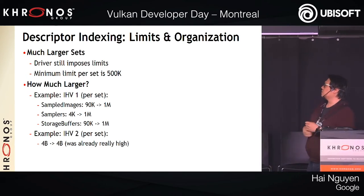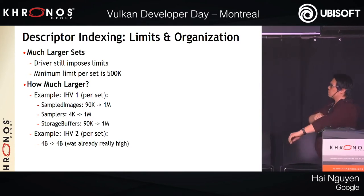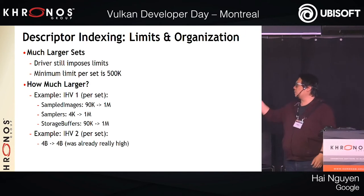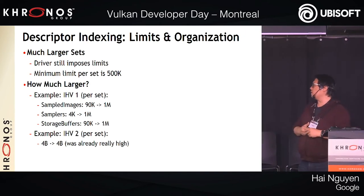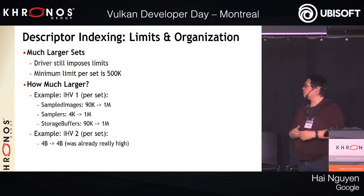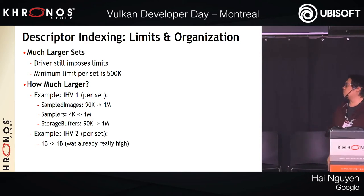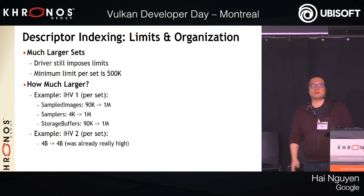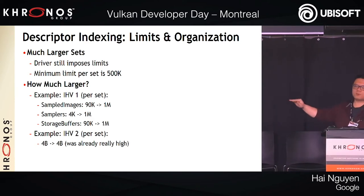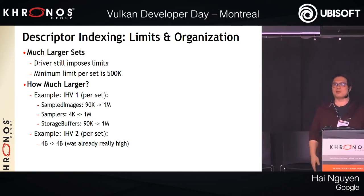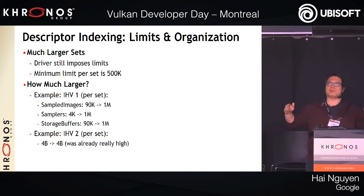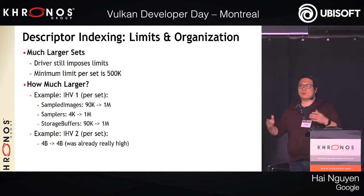Here's how much limits increased for certain IHVs (anonymized). The first IHV went from 90,000 to a million sampled images, from 4,000 to a million samplers, and from 90,000 to a million storage buffers. Another IHV — if you're familiar with this, you probably know who it is — went from just under 4 billion to the full 2^32 minus 1. So the maximum is now the limit.